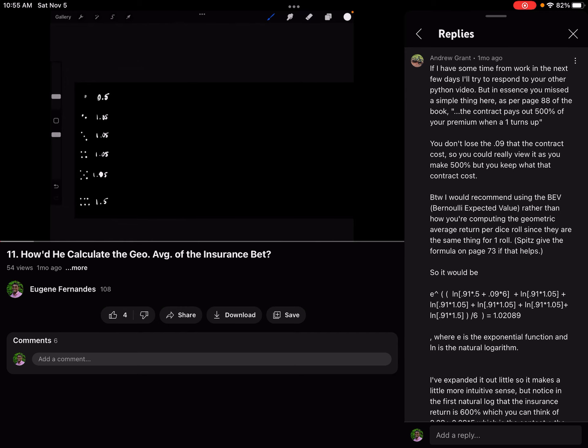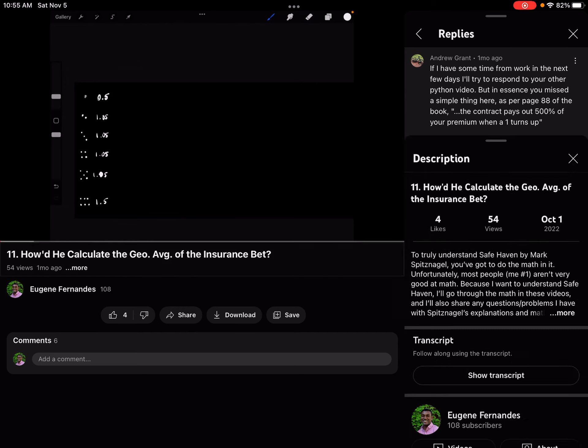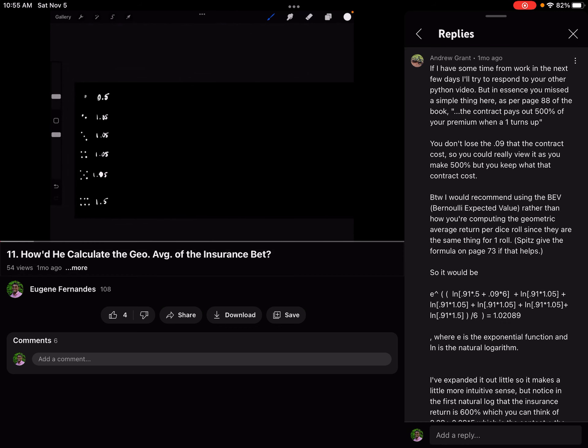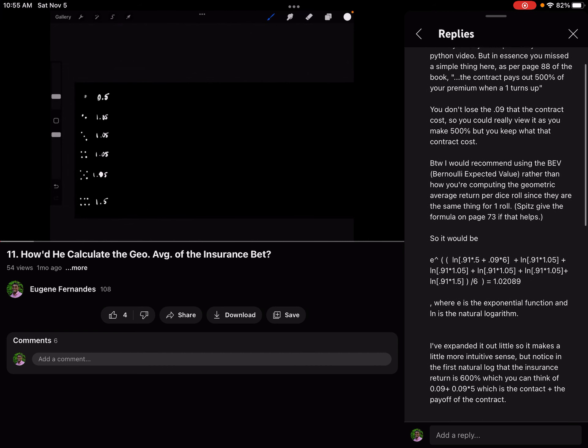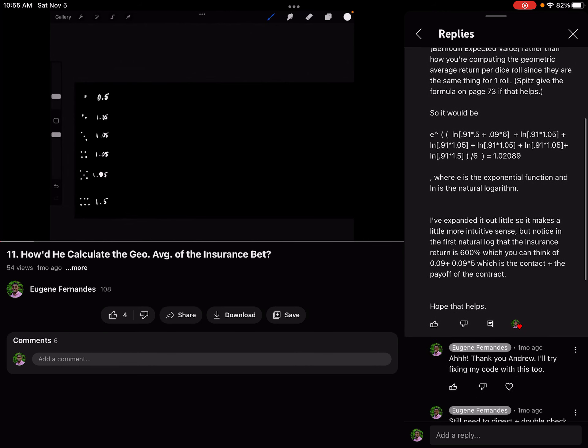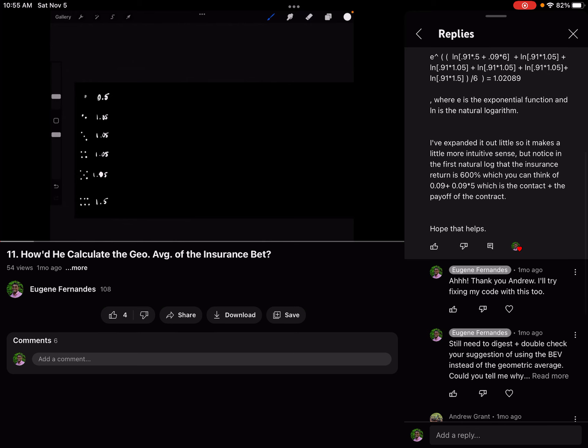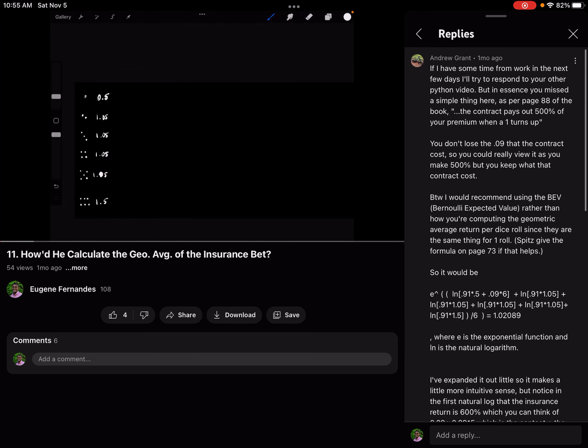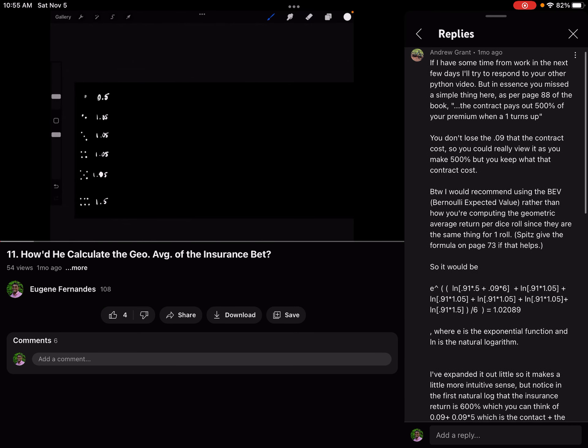I figured out where my mistake was in the 11th episode on how he calculated the geometric average of the insurance bet, because Mr. Andrew Grant sent a very detailed explanation of how I should be calculating it.